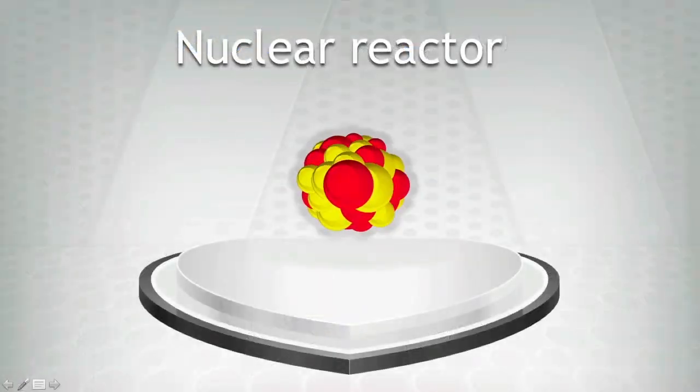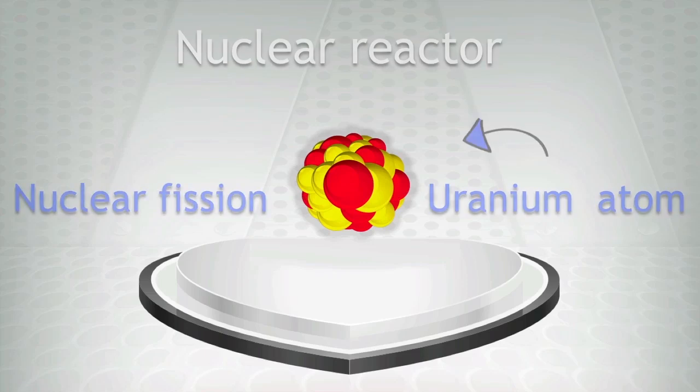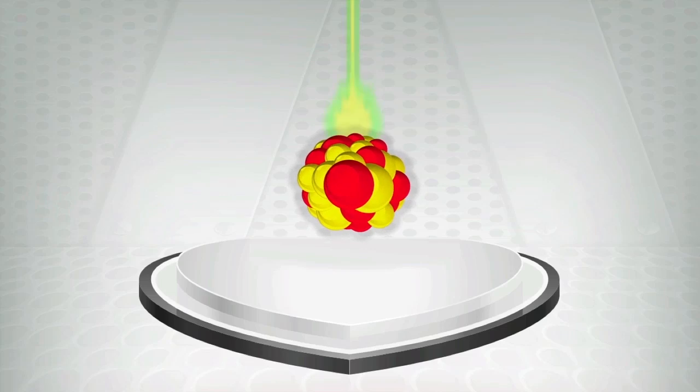A nuclear reactor works by splitting up large atoms such as uranium. This is known as nuclear fission. These large atoms are very unstable and can be split up by firing a neutron at them.